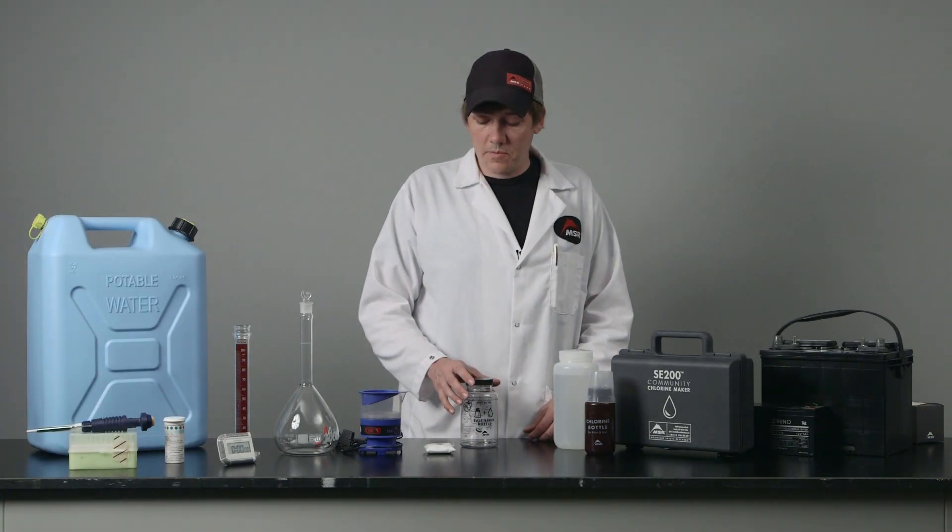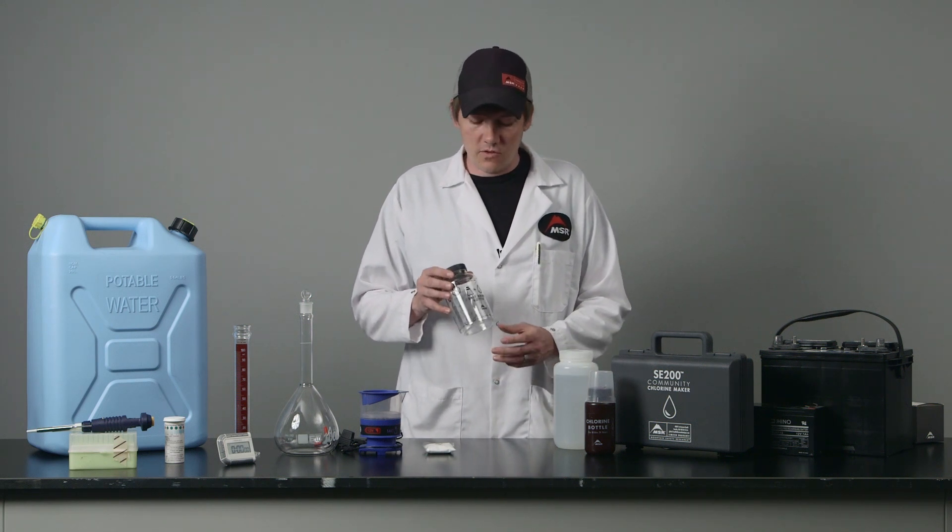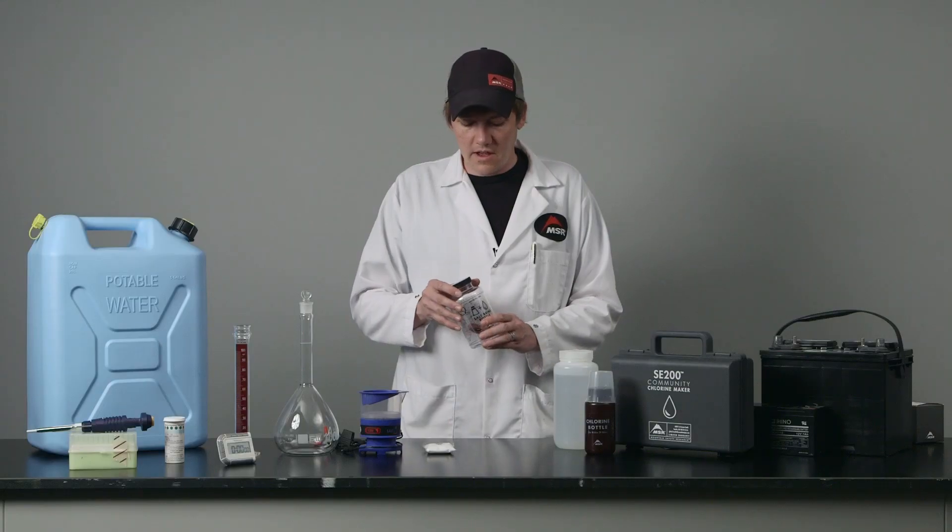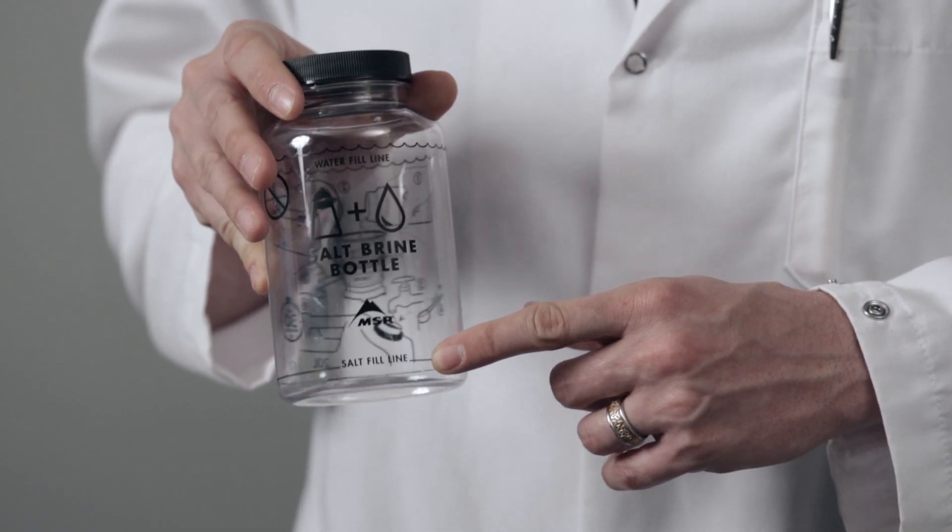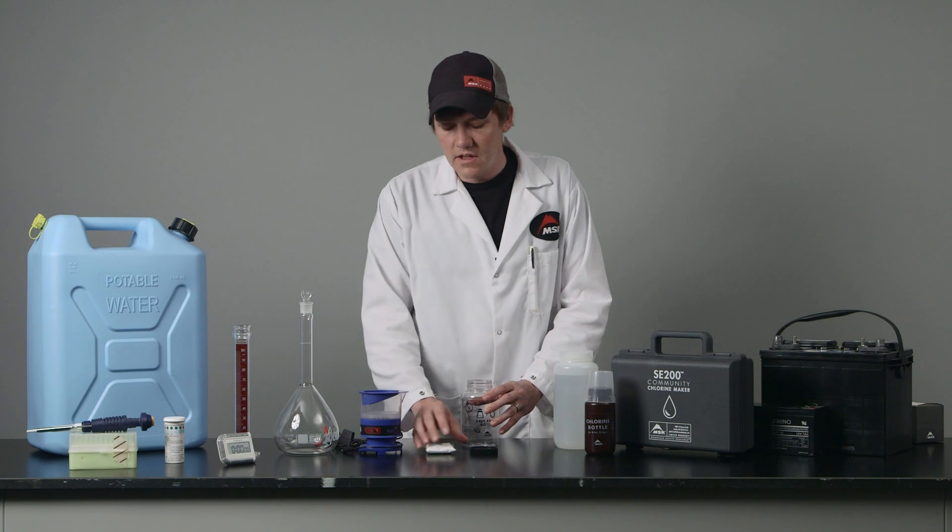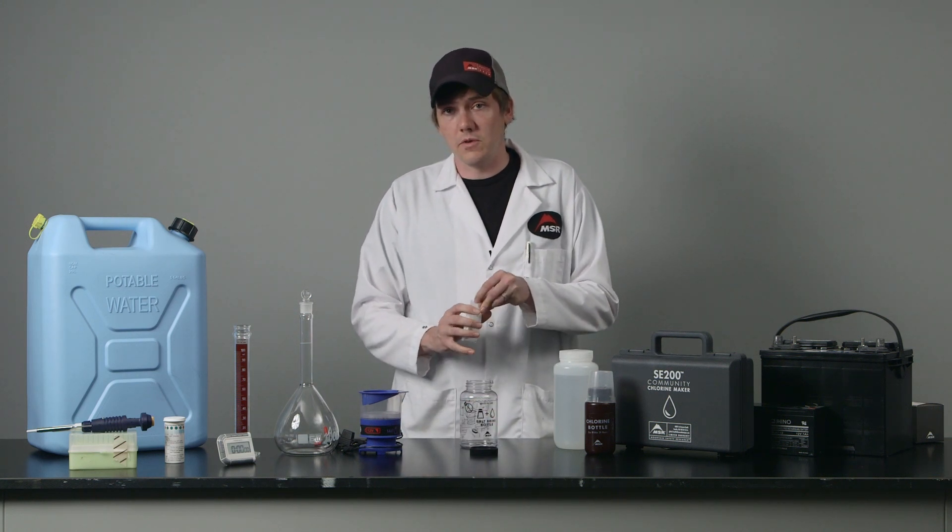The first step in preparing to make chlorine is producing the saltwater solution. To do that I use my saltwater solution bottle and I'm going to add salt to the fill line here on the bottom of the bottle. So remove the cap.